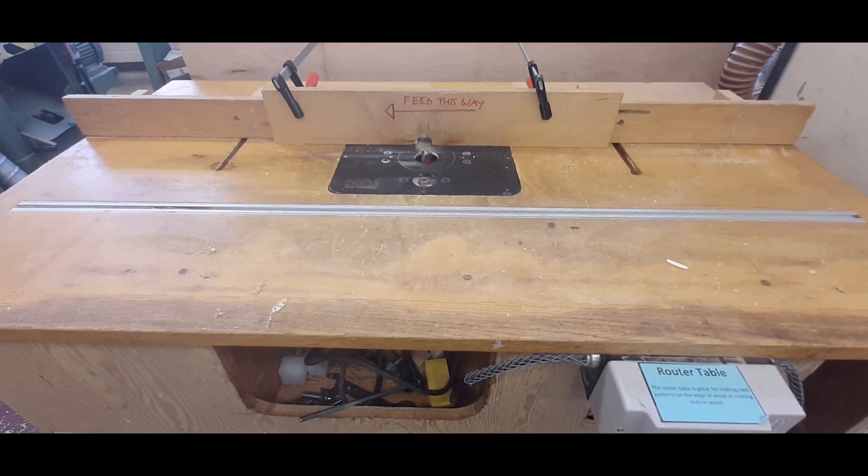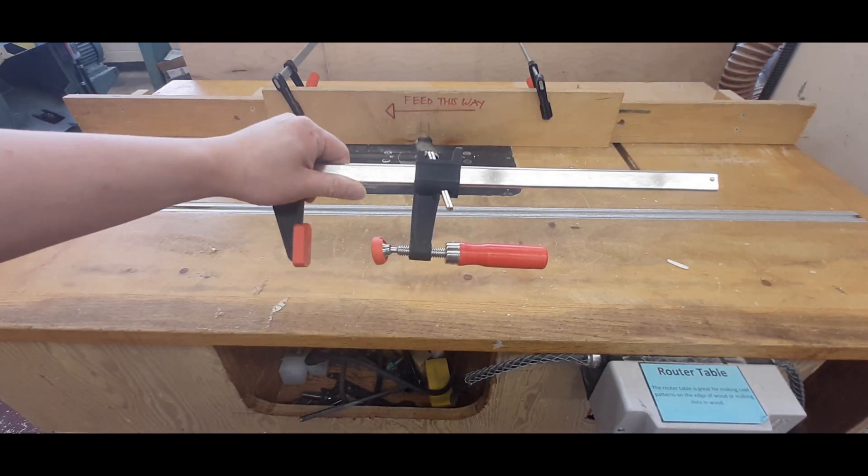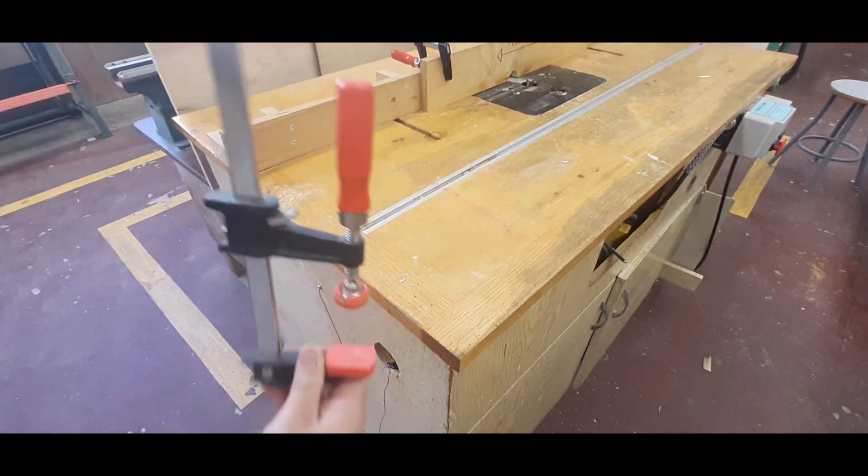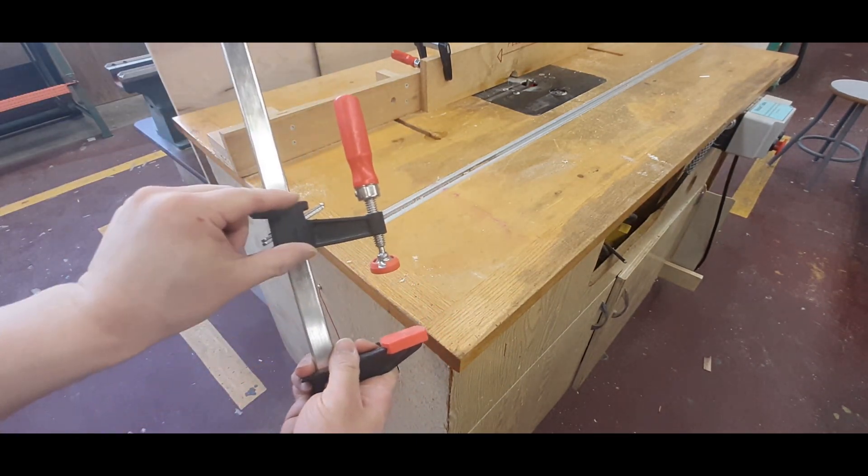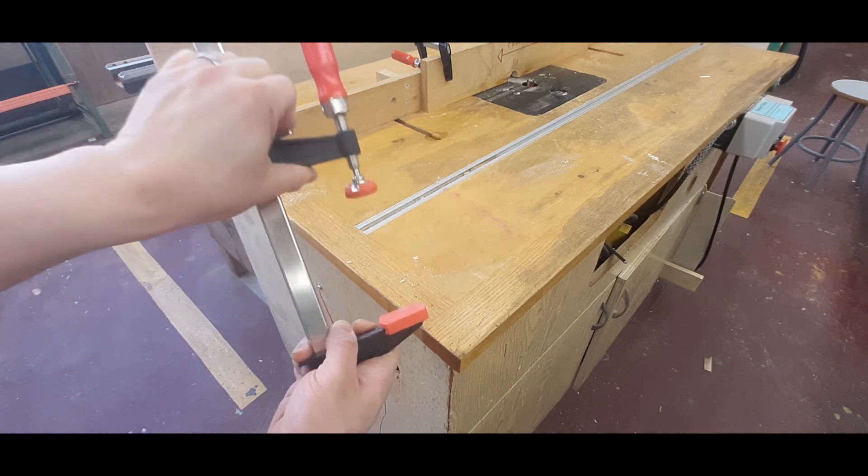After you've unplugged the router, you're going to clamp one end of the fence using one of these clamps. Take your clamp, rotate it so it's upside down, grab the silver ratchet, and you can move it up and down.